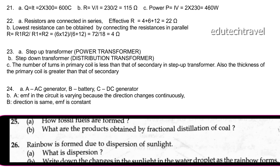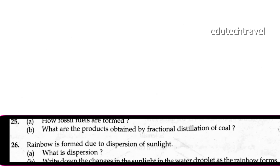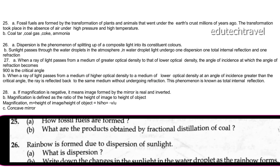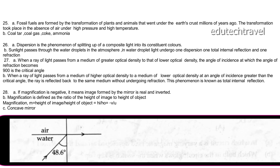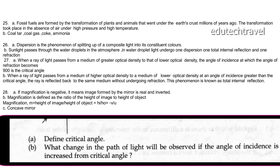Question 25: Fossil fuels are formed by the transformation of plants and animals buried under the earth's crust millions of years ago, in the absence of air under high pressure and high temperature. Products obtained by fractional distillation of coal are coal tar, coal gas, and coal ammonia. Rainbow is formed due to dispersion of sunlight. Dispersion is the phenomenon of splitting composite light into its constituent colors. When sunlight passes through water droplets in the atmosphere, light undergoes one dispersion, one total internal reflection, and one refraction.